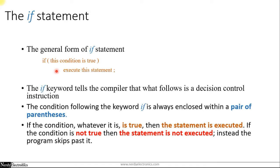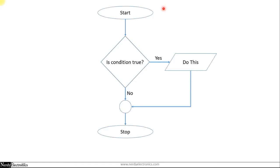Let's see what it looks like in a flowchart. Consider the start as something that happens before the if condition. In the if condition, we check: is the condition true? If it is true, we execute the statement and go to the stop condition. If the condition is not true, we skip that path and go directly forward. So in a way we are controlling the path that the program is taking.